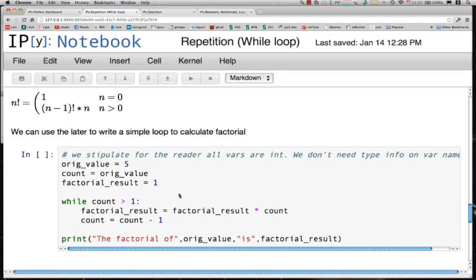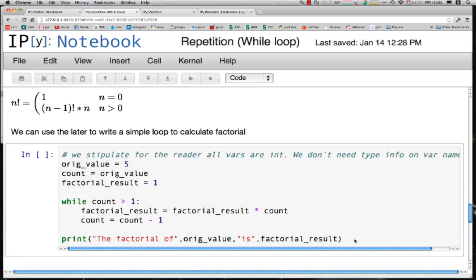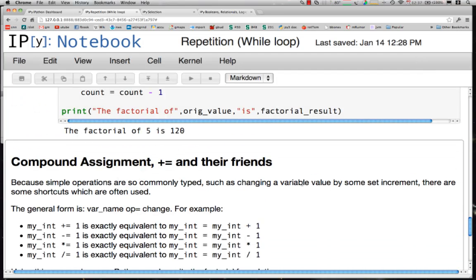And factorial is now 60 times 2 and count goes down by 1. And then count is no longer greater than 1 and we print out the original value of the factorial, which should be 120, which in fact it is.